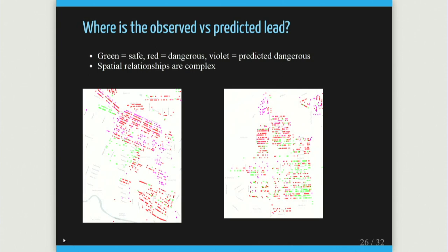Looking at a map of two neighborhoods in Flint: red means they found lead or dangerous material, green means safe, and violet means we predict it will be lead or galvanized steel — which also turns out to be a dangerous material for service lines. Sometimes you get heavy spatial correlation between material types, sometimes you don't. It could be that some developers moved in and did an entire block, or it was sold off to individual homeowners. We're not entirely sure, but it produces interesting dynamics in the data.